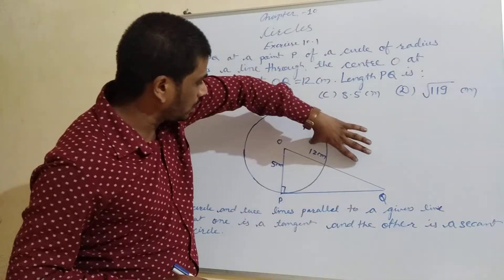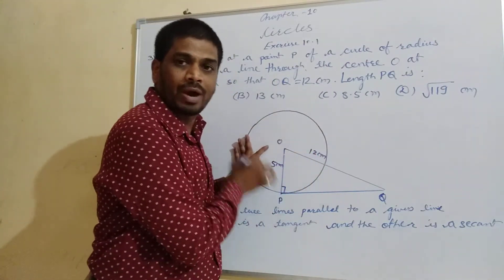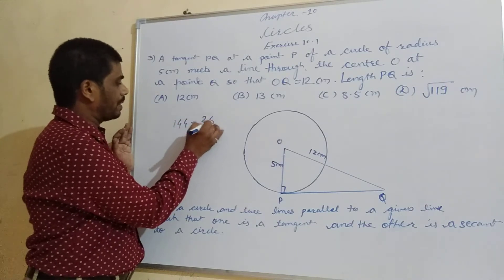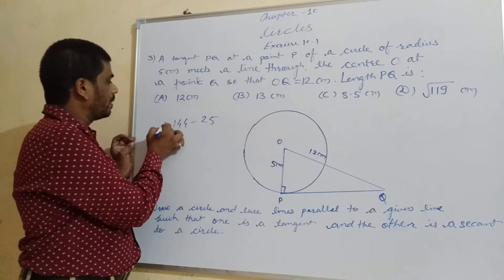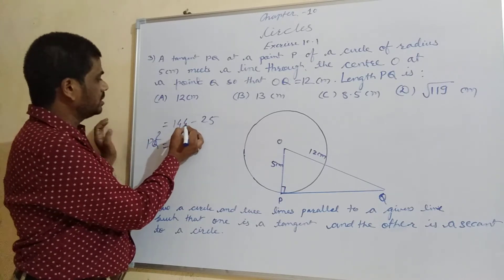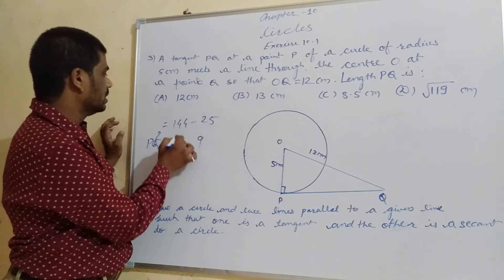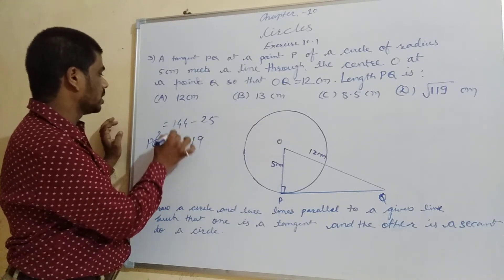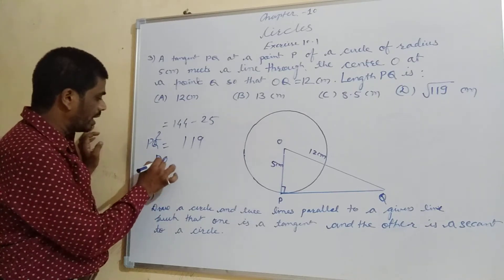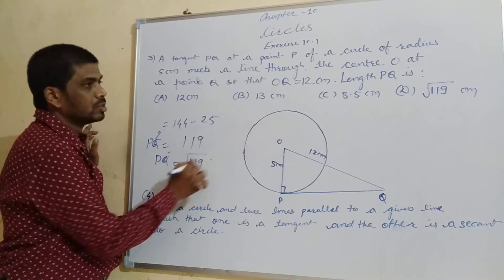PQ squared will be OQ squared minus OP squared, which means 12 squared minus 5 squared, so 144 minus 25 equals 119. Therefore PQ squared is 119, and PQ will be the square root of 119. So the answer is option D.